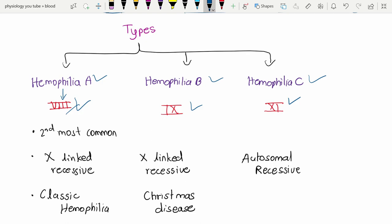Then just add plus 1 and plus 2. Plus 1 is 9, and plus 2 is 11. So hemophilia B has deficiency of factor IX, and hemophilia C has deficiency of factor XI.